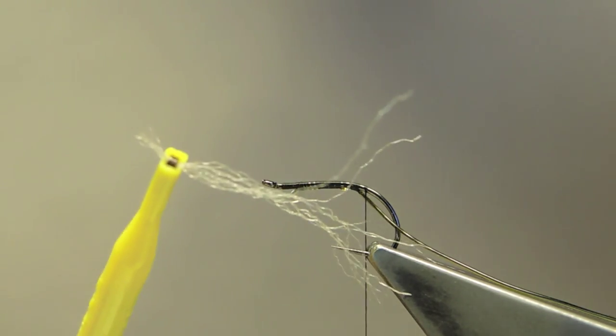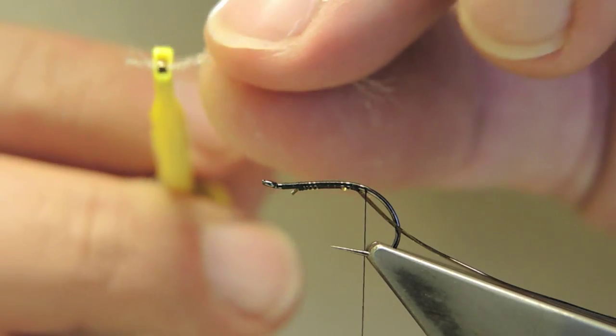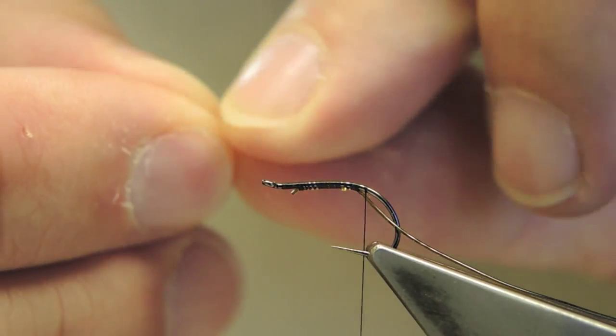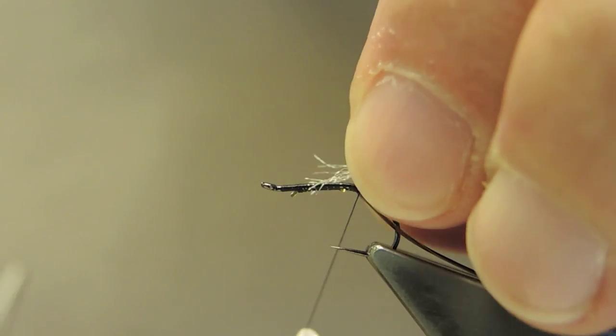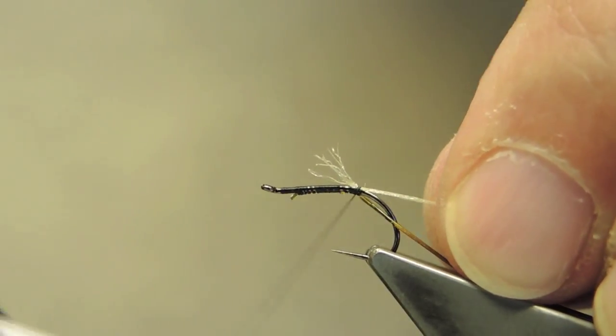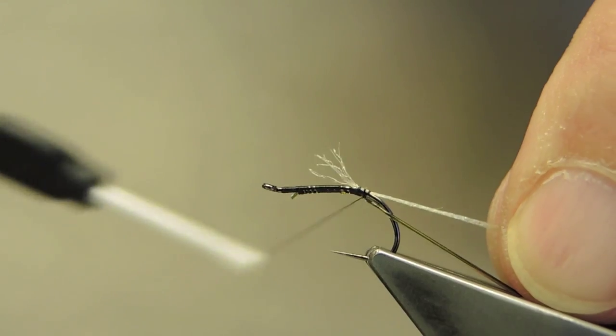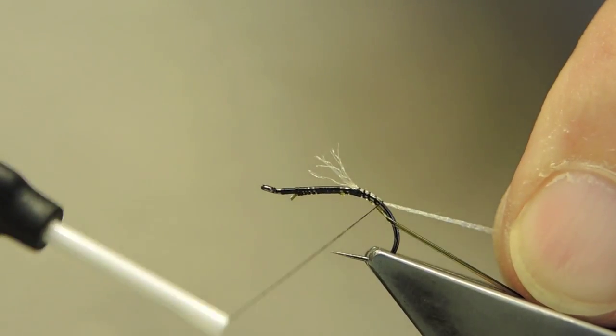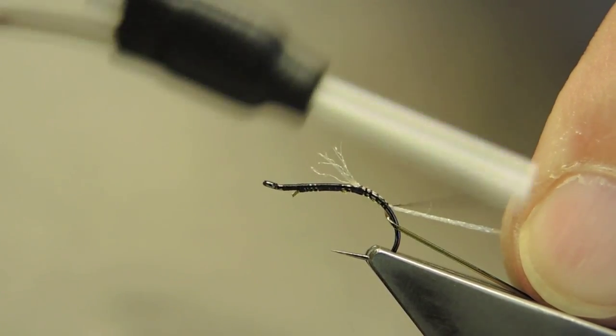The shuck material, some Z-Lon in silver color, tied in on top. D-rib is kept underneath as I wrap well into the bend.